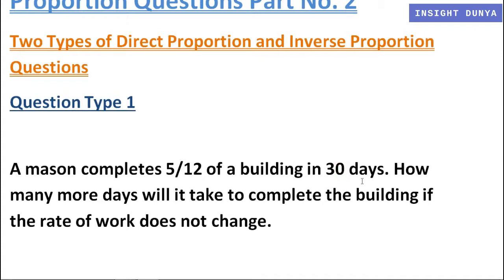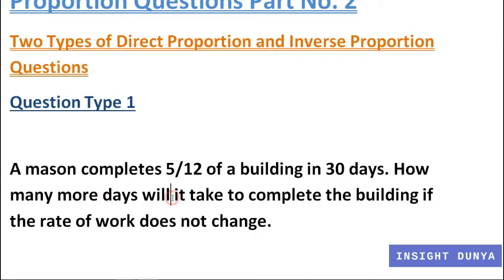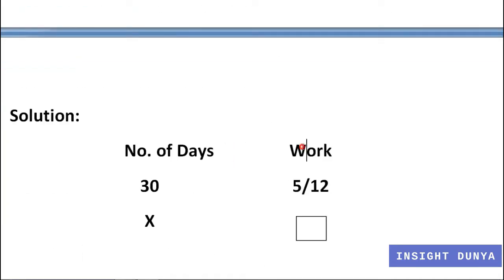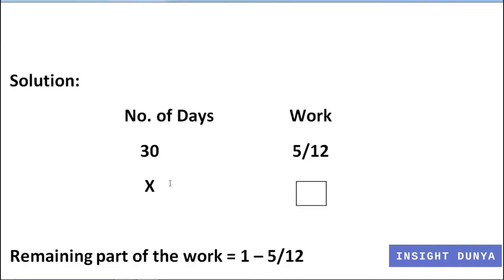We have to find how many more days will be required to complete the work. This question has two quantities: the number of days and the part of work. Following rule number one of direct and inverse relation questions, I will write the number of days on the left side and the part of work on the right side. Here I write 30, and in front of 30, below 'work', I write 5 over 12.